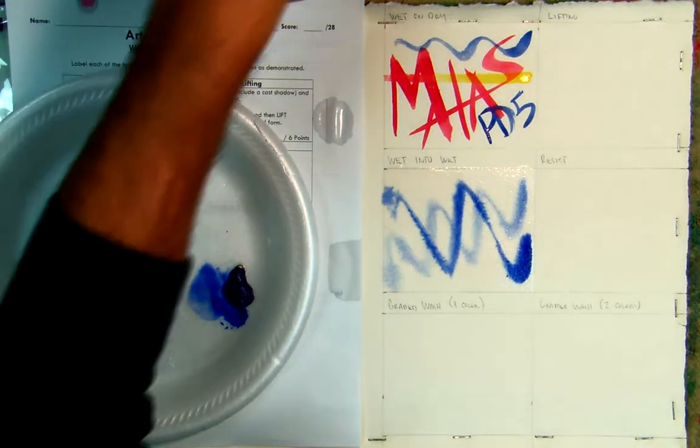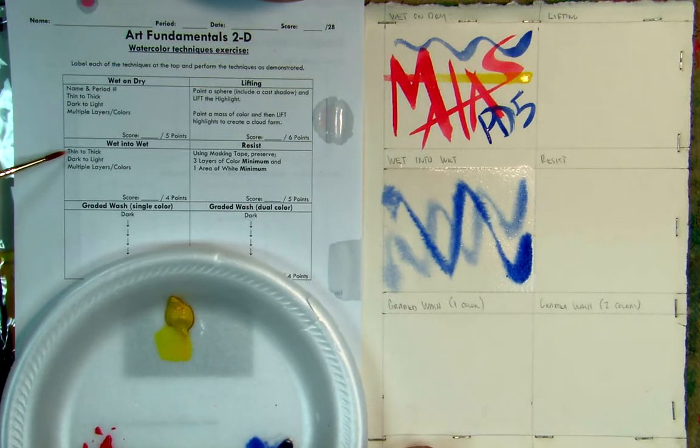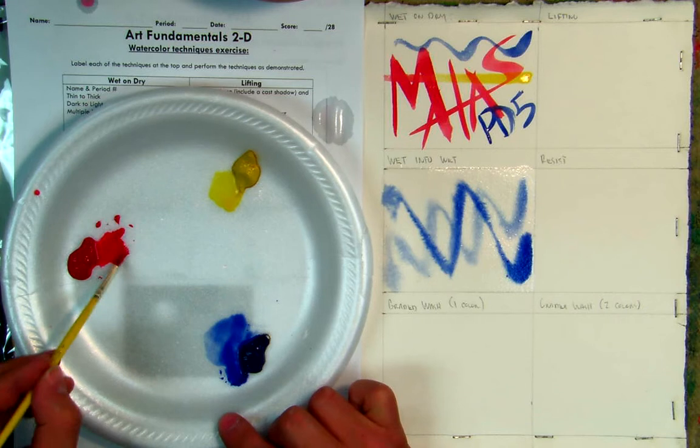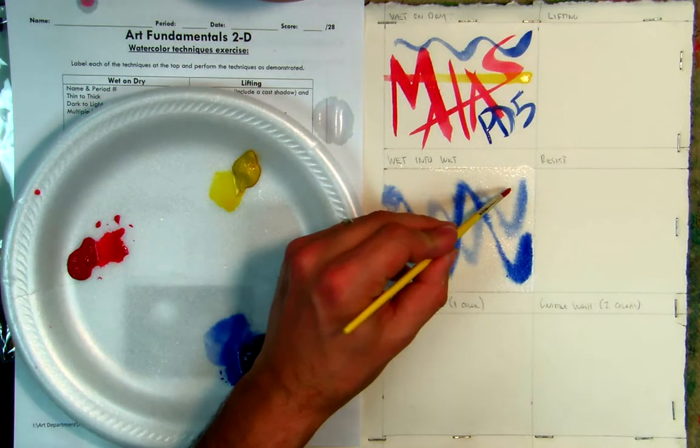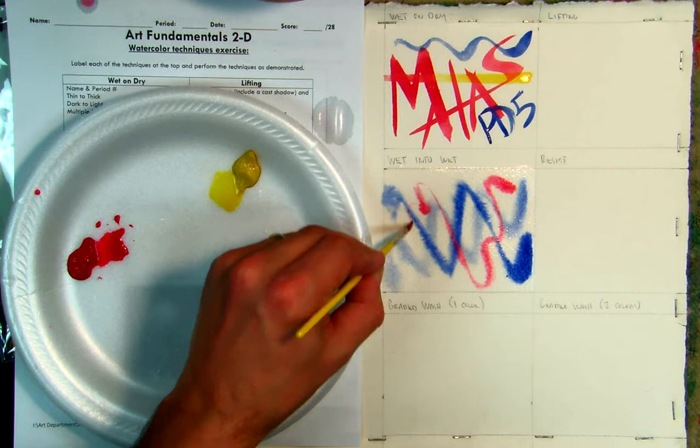Now I'm going to use my other color. I'm going to use another color in here as well, because part of my requirements is dark to light, thin to thick, multiple layers and colors. So now I'm going to come in here and I'm going to use some red. And again, I'm going to play with this line. That's pretty fun.